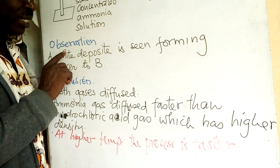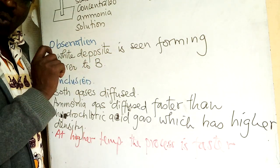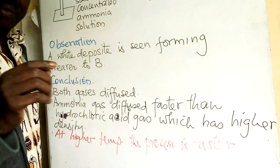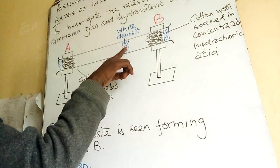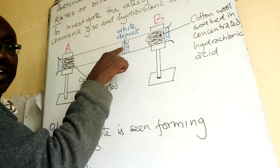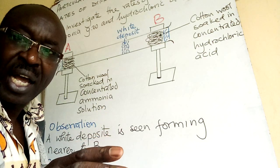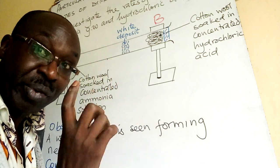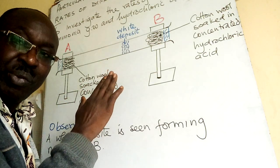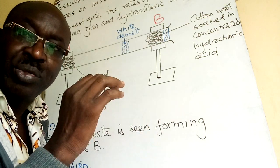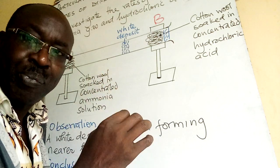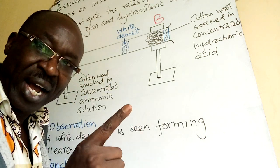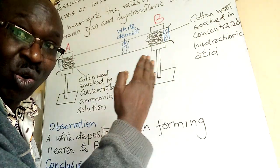What will you observe? You will see a white deposit. Where is it formed? It is formed on the side nearer B. This is what you will see. Remember, you can be asked: 'This experiment was carried out — briefly explain the observation.' So a white deposit is seen, and you have to give us the relative position where it is formed — it is formed towards B.